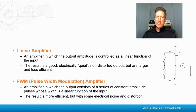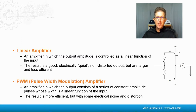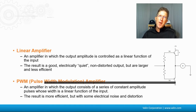There are different types. There's the linear amplifier, shown over on the right, which has an output amplitude that's controlled as a linear function of the input. It produces an electrically quiet and non-distorted output, but they're larger and less efficient, so we don't see them very much in industrial automation — they're much better for lower power applications. We typically use PWM or pulse width modulated amplifiers, where the output consists of a series of constant amplitude pulses whose width is a linear function of the input. The result is more efficient, but with some electrical noise and distortion. If you want to know more about this, go back to my episode nine on linear noise and how to deal with that.